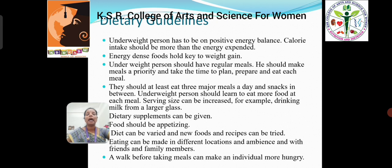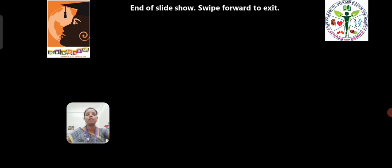Dietary guidelines. Underweight persons have to be on a positive energy balance, so calorie intake should be more than the energy expended. Energy-dense foods hold the key to weight gain. They should eat 3 major meals a day with snacks in between. Underweight persons should learn to eat more food at each meal; serving size can be increased. Dietary supplements can also be given. Their food should be appetizing, and the diet can be varied with new foods and recipes tried. Eating in different locations and ambience with family and friends can help. A walk before taking a meal can make an individual more hungry.